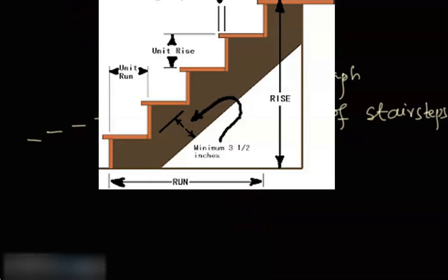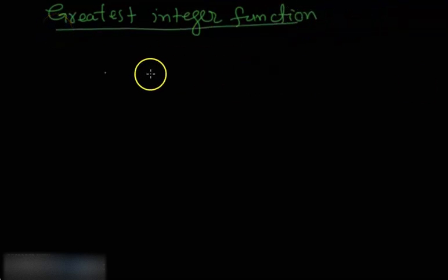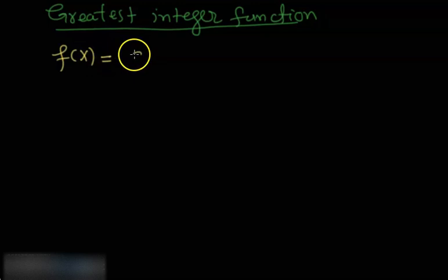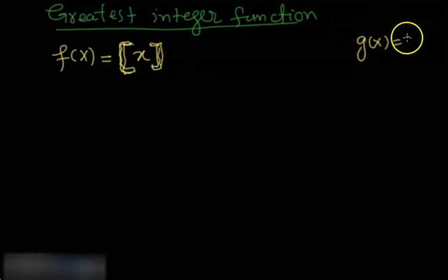Let's define something called the greatest integer function. We define this function as f(x) = ⟦x⟧, written with capital brackets. You might be thinking: what do we mean by this function? Previously, if we had g(x) = x², when we put x = 1 it gives 1², and when we put x = 2 it gives 4. So the question is: if we insert a value here, what will it give?